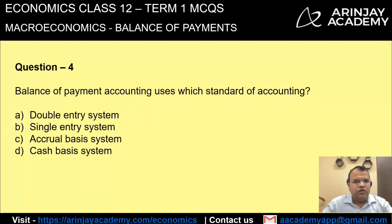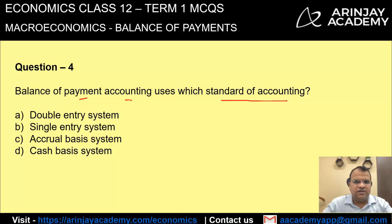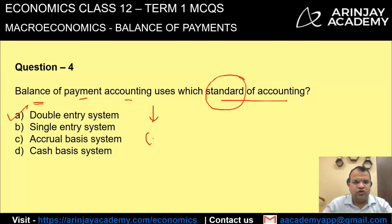Balance of payment accounting uses which standard of accounting? You know what double entry is, single entry, cash basis, and accrual basis. Insofar as balance of payment is concerned, it uses the double entry system, wherein receipts are shown on the credit side and payments are shown on the debit side. Therefore, the correct answer is A.